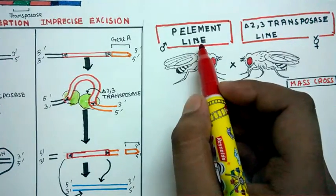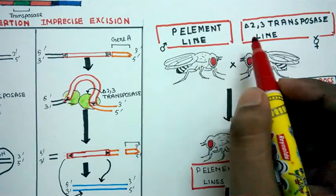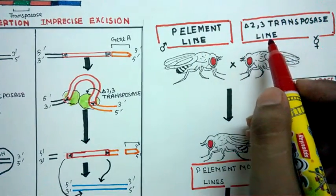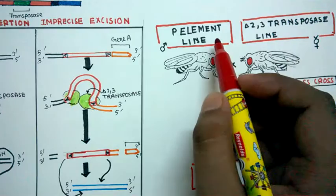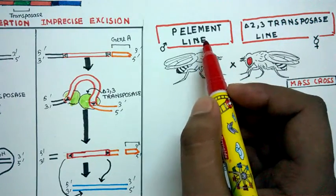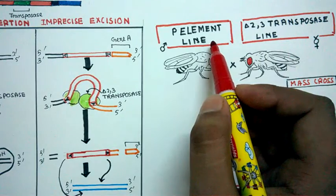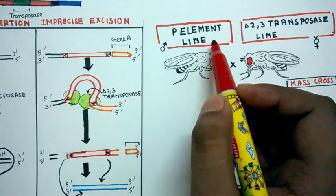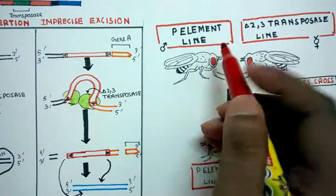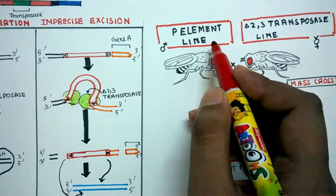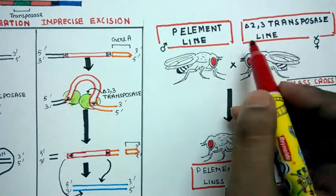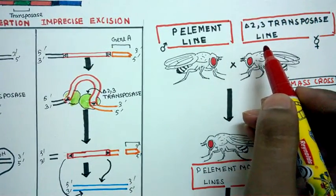And on the other hand side, you have to have a transposase line. Because remember, in the P-element line, whatever P-element you have which is sitting near a gene is defective. That means it can't produce its transposase. So that is why this P-element line needs the help of this transposase line. This P-element line requires help from other transposase in order to jump.